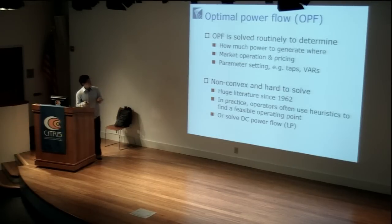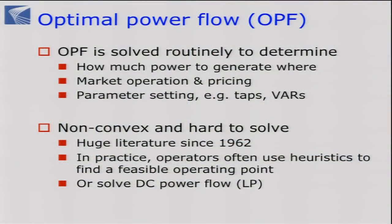So, optimal power flow. It's extremely important. It is solved routinely every day, every hour, in real time, around the world. It's used not only to compute which generators generate how much and when, but also to set transformer configurations and prices. There's a huge literature since the first formulation in 1962. It's a non-convex optimization problem — hard to solve, not only because of its large size, but also because it's non-convex, and therefore no one really understands the structural properties of power flows.